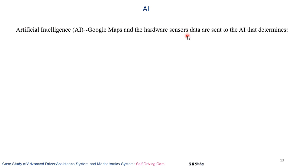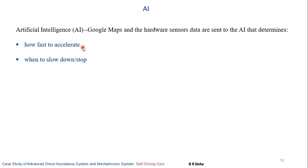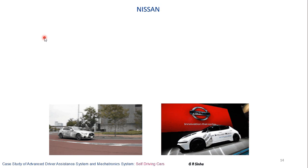Google Maps and hardware sensor data are sent to the AI, which determines how fast to accelerate, when to slow down, when to stop, and when to increase speed. The AI also decides when to steer the wheel and in which direction. All these decisions are made with the help of artificial intelligence. This concludes the discussion about Google's driverless car.